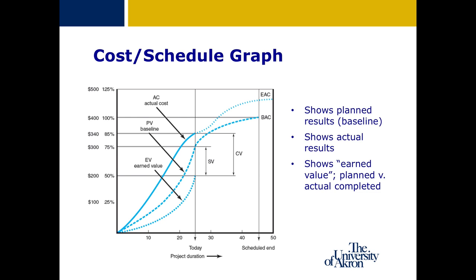The textbook provides an example of a cost-schedule graph to help visually show project status. The graph shows three key groups of measures at a specific point in the project. The planned value introduces a new concept — the total budget for the project is called the budget at completion, or BAC. Actual costs are pulled from the timesheets discussed earlier. The earned value is calculated from the plan and actual costs and used as a basis to determine the cost and schedule variances shown on the graph.